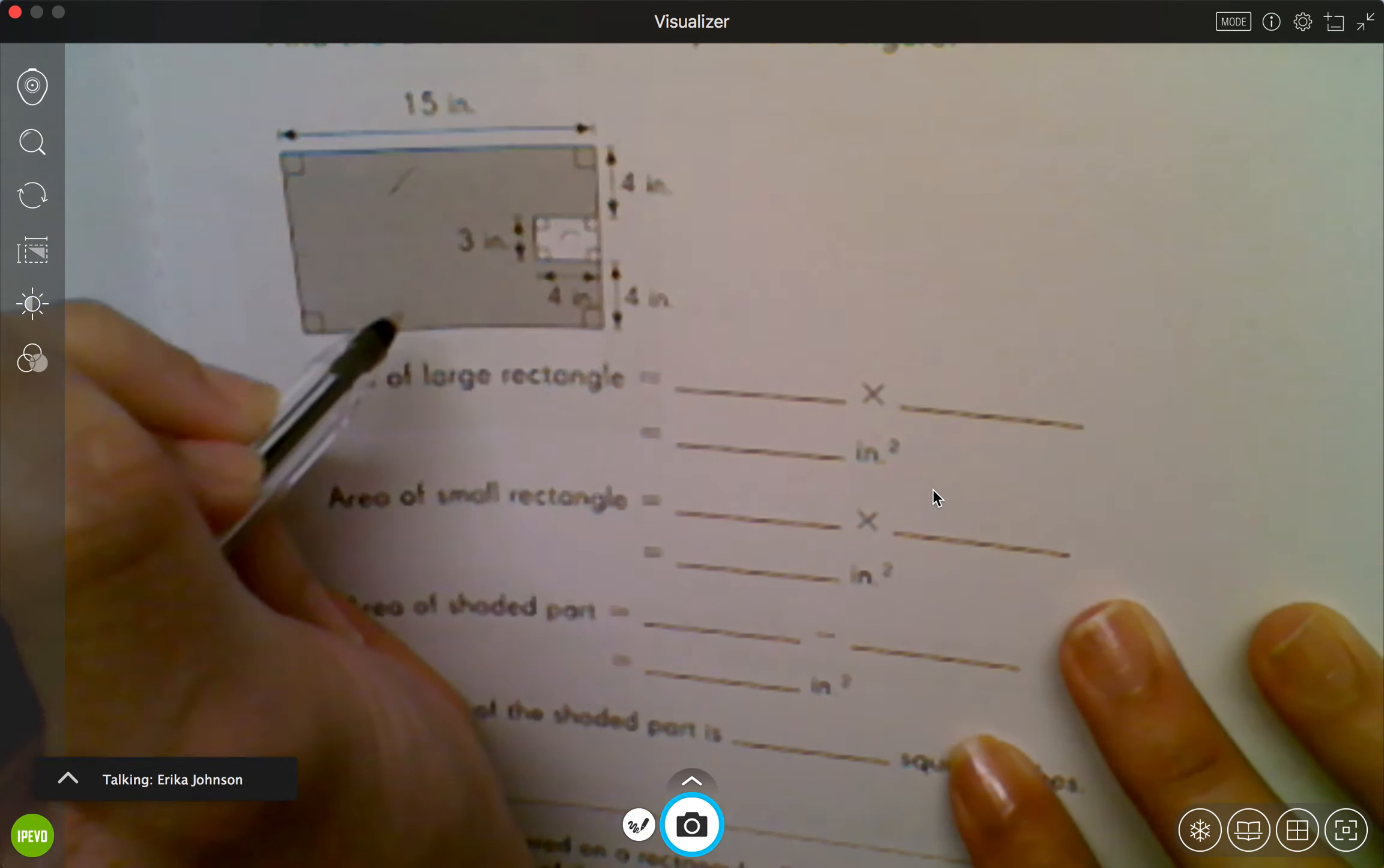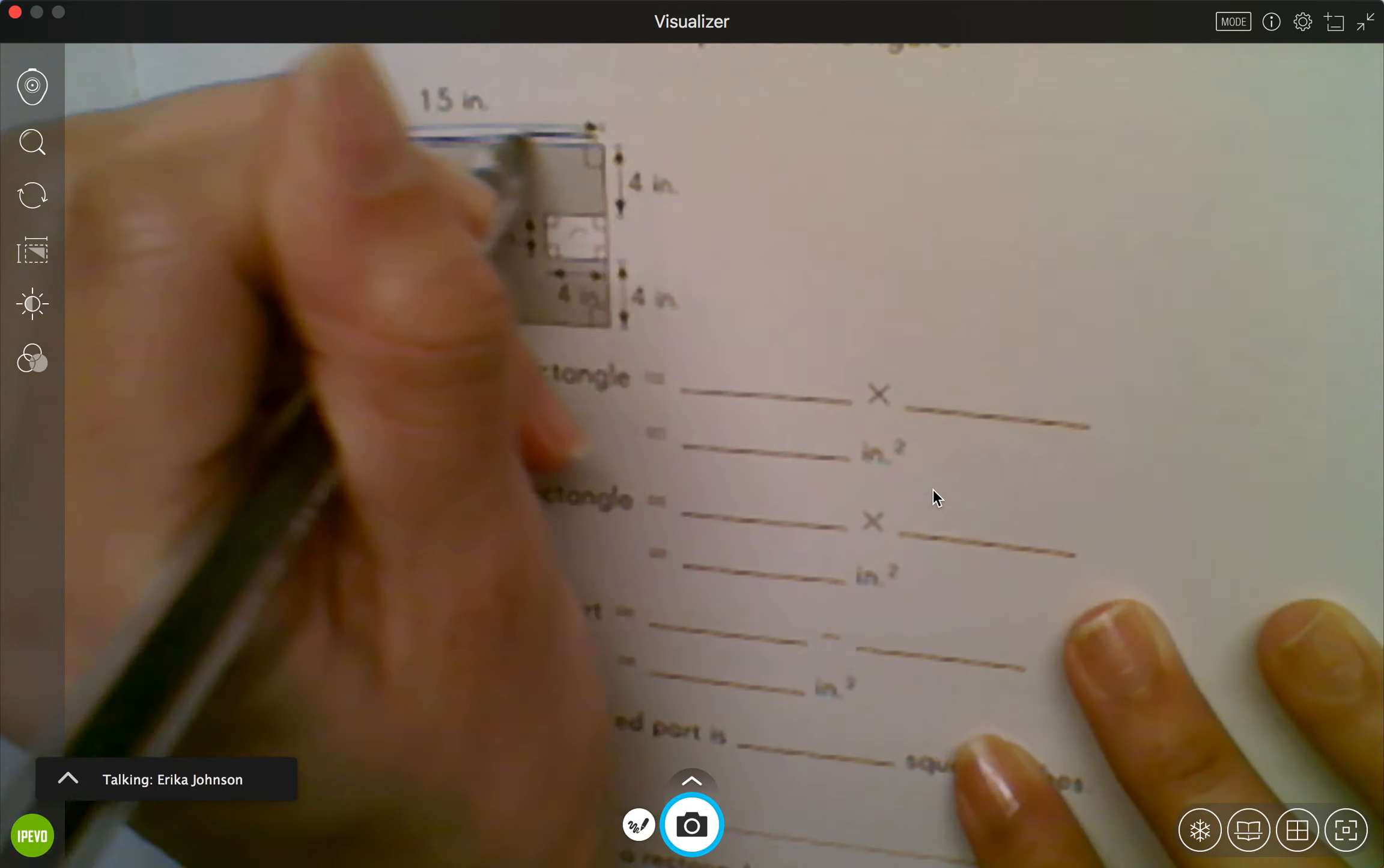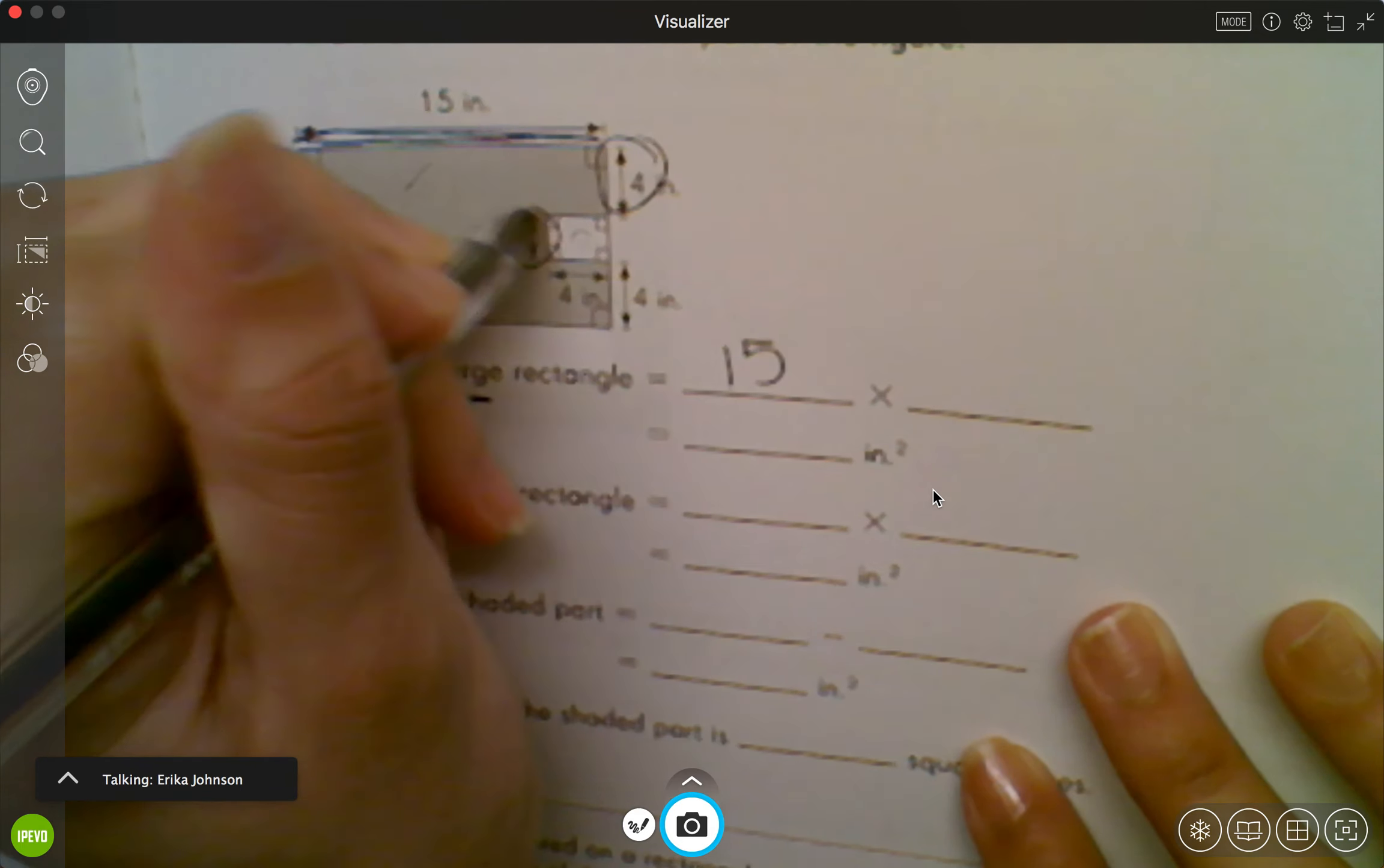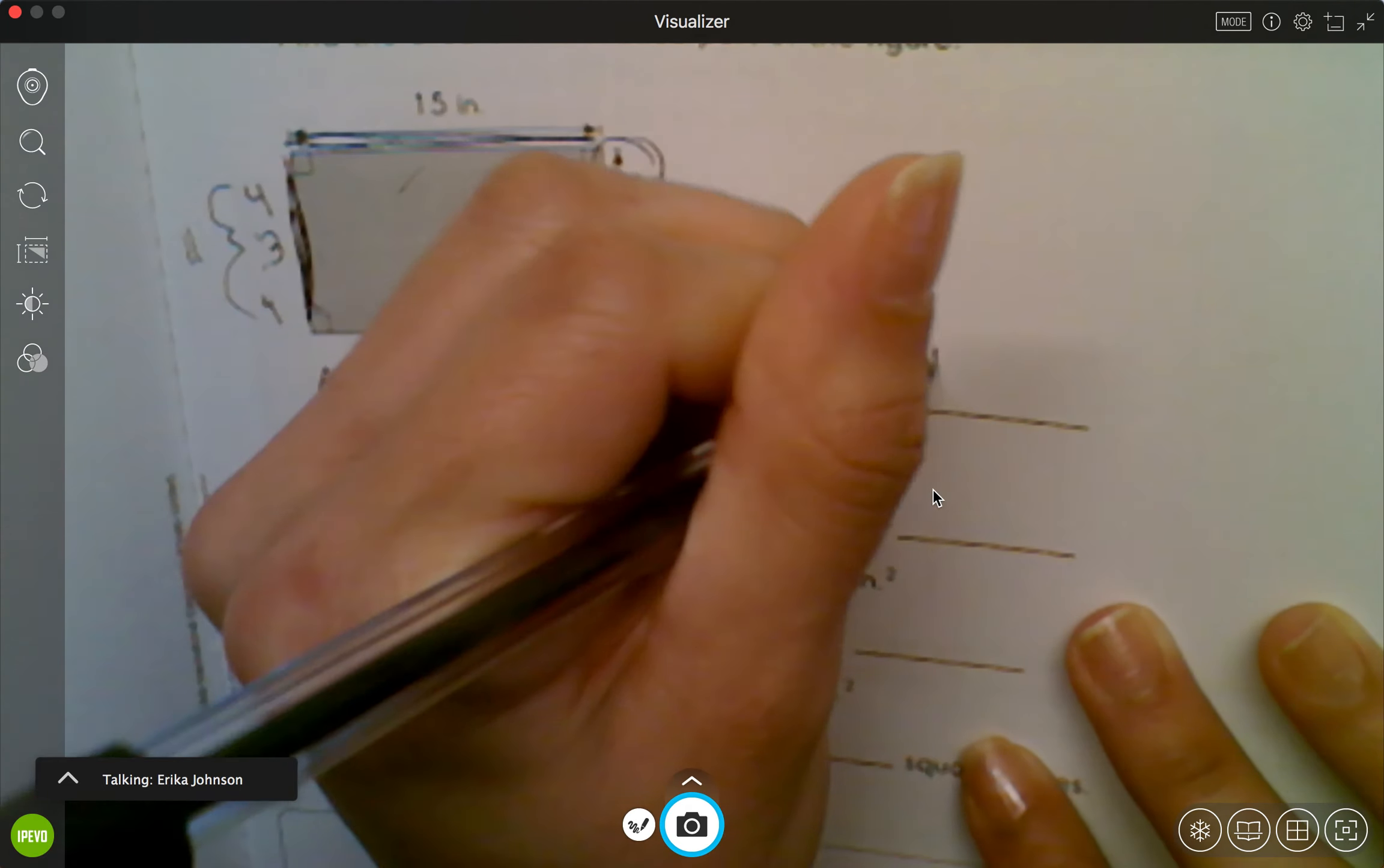So let's do the large rectangle first. I know the area is how long it is times how wide it is. So I see that the length is 15. Now I have to figure out the width. Well if this side's 4, then that side's 4. If this is 3, then that's 3. And if that's 4, then that's 4. So 8, 9, 10, 11. So this side is 11.